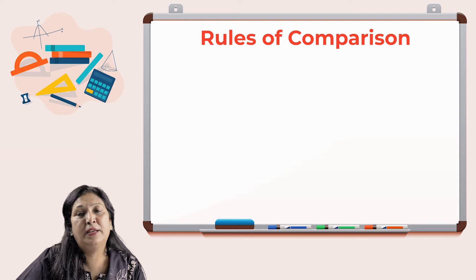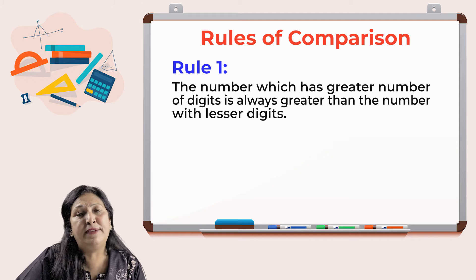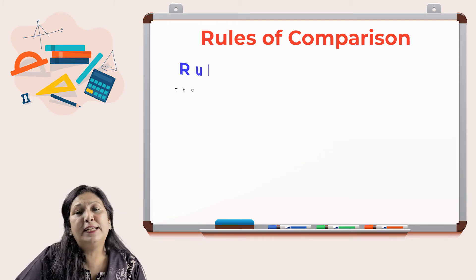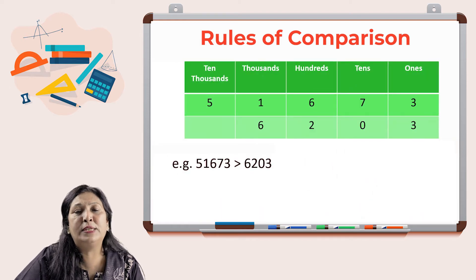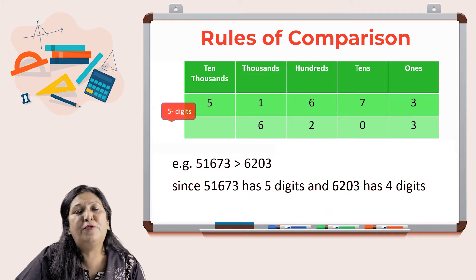Rule one: The number which has a greater number of digits is always greater than the number with lesser digits. For example, 51,673 is greater than 6,203 as the first number has five digits while the second has four digits.